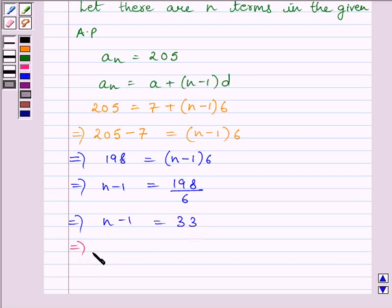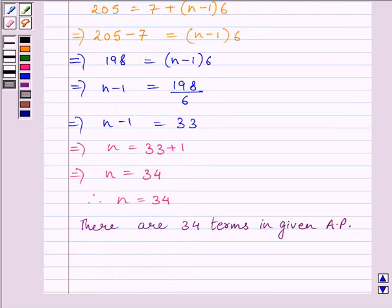Now, finally, we get n equals 33 plus 1, which equals 34. So, there are 34 terms in the given AP. Our required answer is 34.